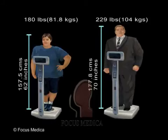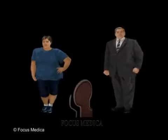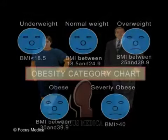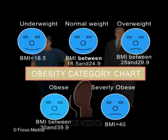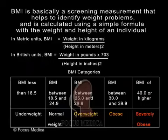BMI is calculated by a simple formula using the weight and height of an individual to establish a classification into categories of obese and overweight. A BMI greater than or equal to 30 indicates obesity.